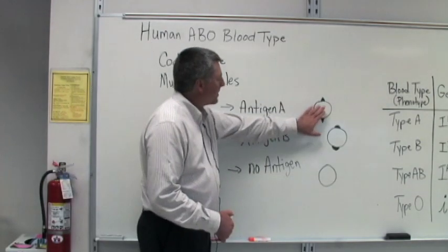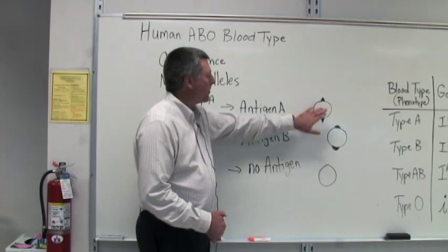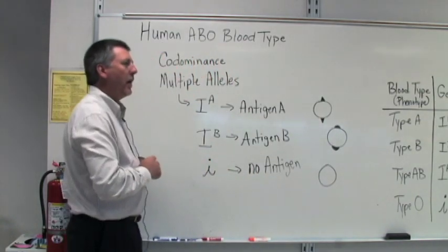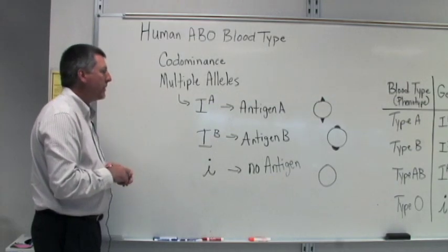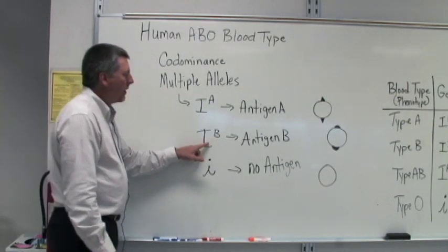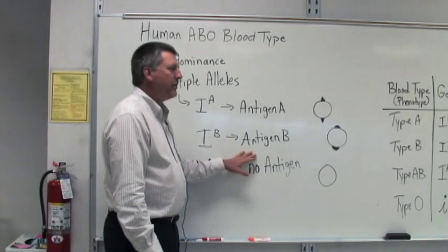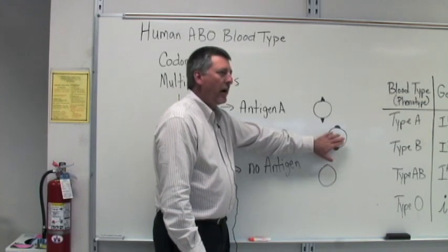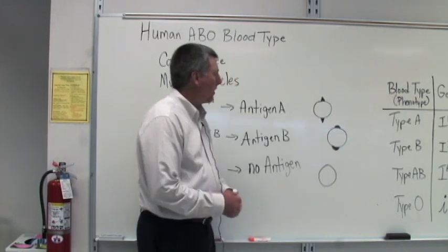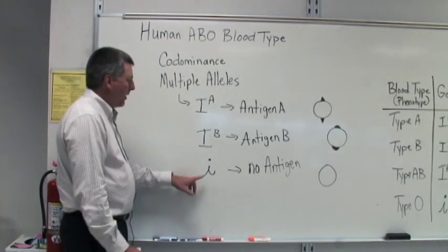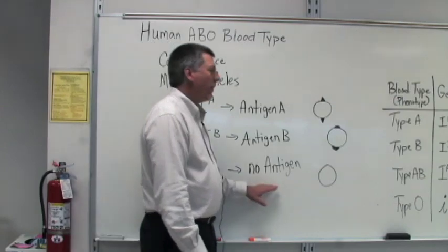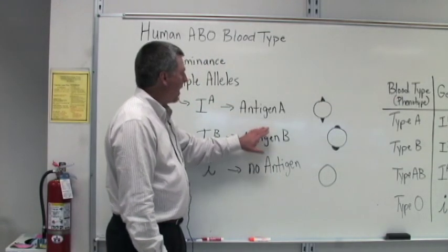I've represented antigen A on this red blood cell — this circle is representing a red blood cell and the little triangles are representing the A antigen found on the surface of the red blood cells. The IB allele codes for antigen B. I've represented antigen B as a little semi-circle on this circle, which represents a red blood cell. Then we have the little i allele.